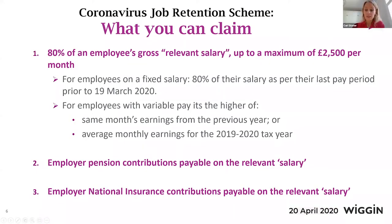Assuming you've navigated the eligibility criteria successfully, the next question is how much you can claim per employee. The reimbursement is calculated per employee and will be 80% of that employee's gross relevant salary — their regular wage — up to a maximum of £2,500 per month. So it's the lower of 80% of their regular wage and £2,500 per month. For those with a fixed salary, this is taken as the salary in their last pay period prior to the 19th of March, typically February.